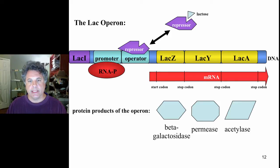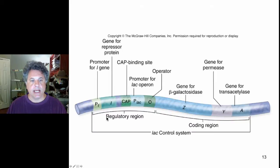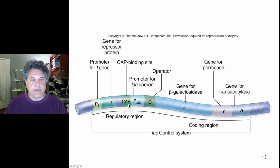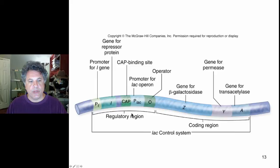Let's introduce another protein binding site, the CAP binding site, which lies between the lac I repressor gene and the rest of the operon — promoter, operator, and structural genes of the operon. The CAP binding site binds a protein called catabolite-activated protein, and that's why it's called the CAP binding site. That is part of the entire regulatory region of the lac operon.